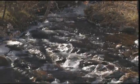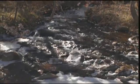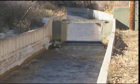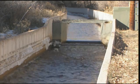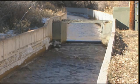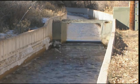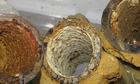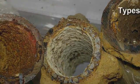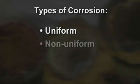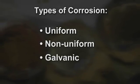Prior to developing a corrosion control program, it is important to first understand the factors that influence internal corrosion and metal release in drinking water distribution systems. There are several types of corrosion important in drinking water: uniform, non-uniform, and galvanic.